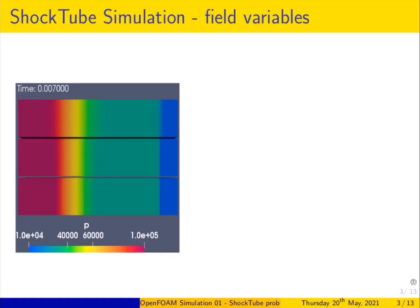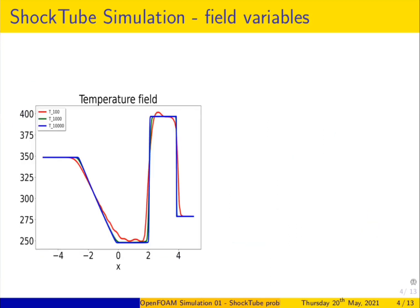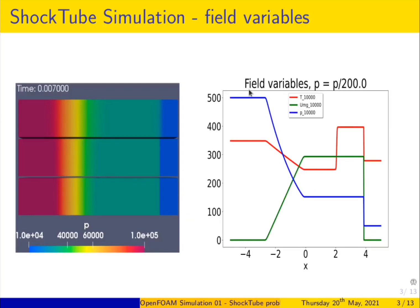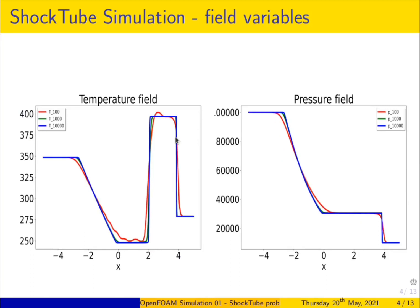In this session, we are going to simulate a shock tube problem and obtain results like temperature field and pressure field contour plots. We simulate the problem using OpenFOAM and visualize the results using ParaView. Plots and graphs are done using Python, or alternatively using LibreOffice Calc, Origin, Gnuplot, MATLAB, Excel, and so on.